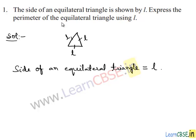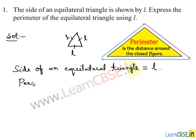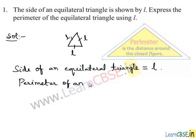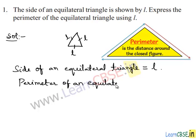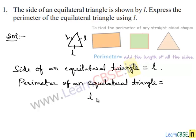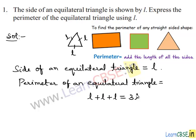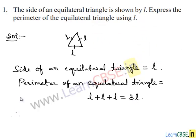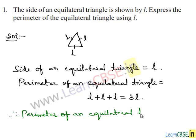They have asked us to find the perimeter of the equilateral triangle using L. So the perimeter of an equilateral triangle equals, since it has three sides, L plus L plus L, which is equal to 3L. Therefore, the perimeter of an equilateral triangle is equal to 3L.